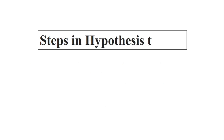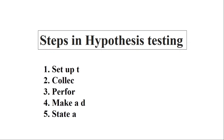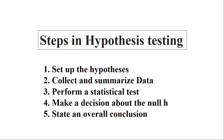There are five basic steps involved in the hypothesis testing process. Step one: set up the hypothesis. Step two: collect and summarize data. Step three: perform a statistical test. Step four: make a decision about the null hypothesis. And step five: state an overall conclusion.